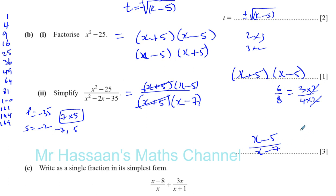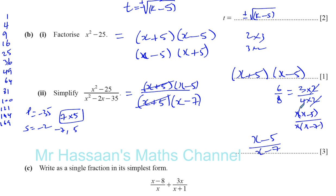And that's your answer for that part. You have to remember you can't just cancel out the x squared - that's very common. That x squared is not multiplying the whole numerator, and that x squared is not multiplying the whole denominator. Similarly, you can't cancel the x's individually. The x would only be cancellable if it was multiplying the whole of the numerator and the whole of the denominator - like x times x minus 5 over x times x minus 7.